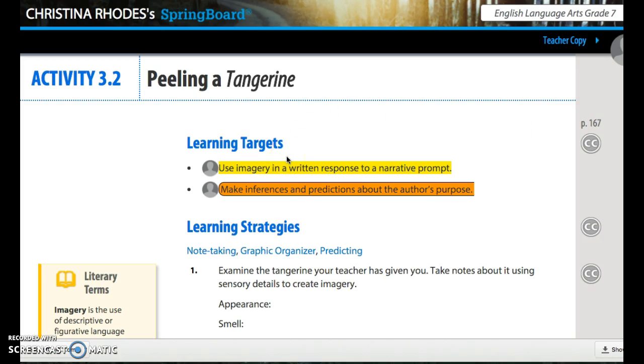Number one says using imagery in a written response to a narrative prompt. So you're going to be using your five senses: taste, touch, sight, sound, and smell. Please write those down next to imagery, the five senses.